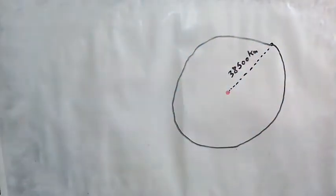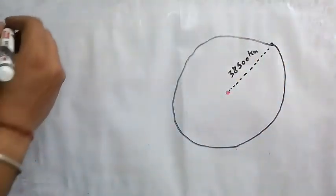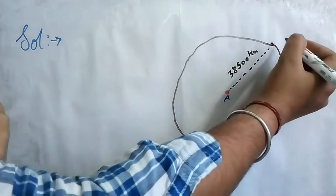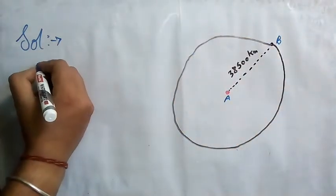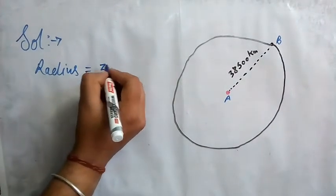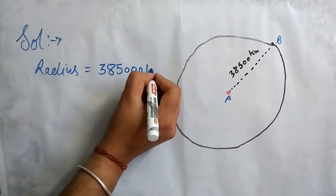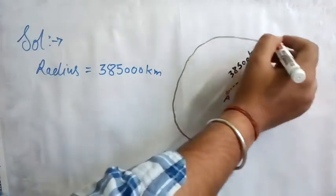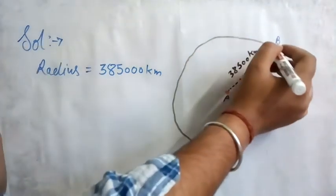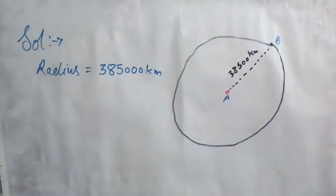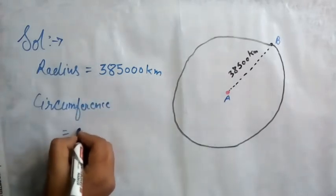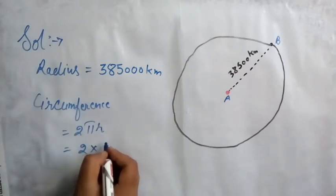The distance covered in one month will be the circumference of this circle, so we have to find out the circumference. We are given that if A is earth and B is moon, then AB — that is the radius of the circle — will be 385,000 kilometers. The total length of boundary is the circumference of the circle, so circumference will be 2πr.